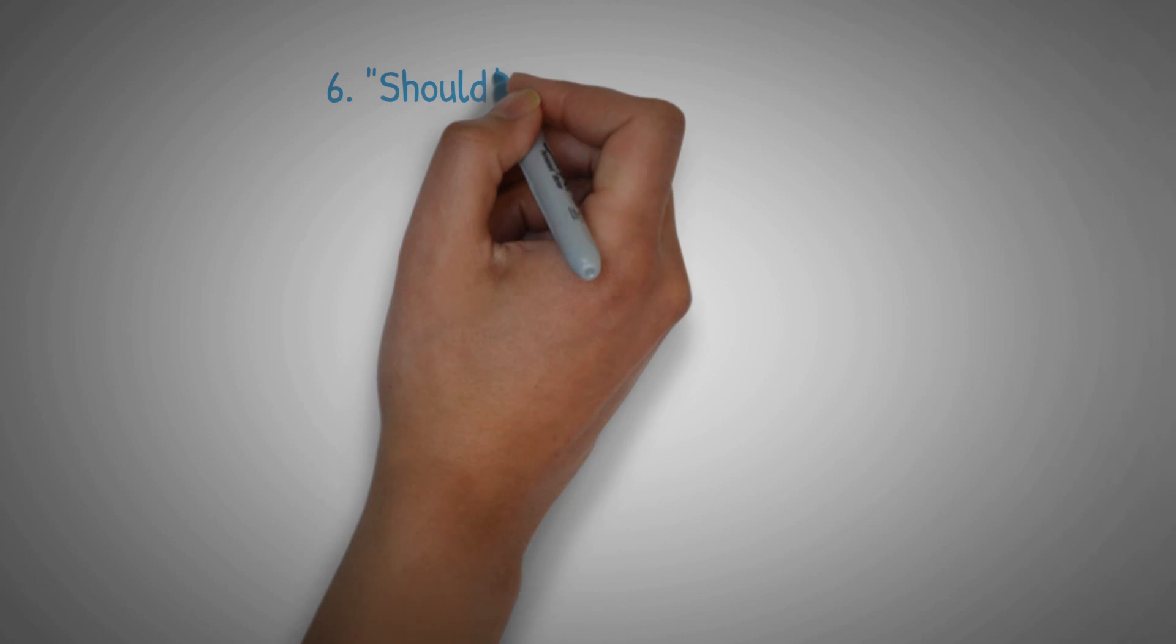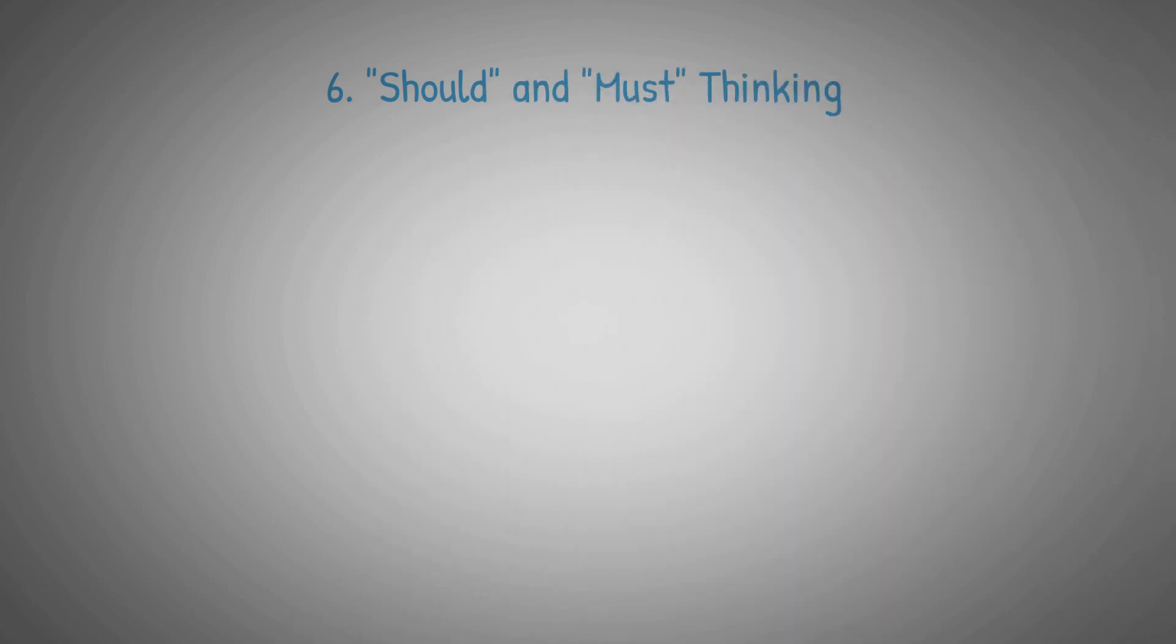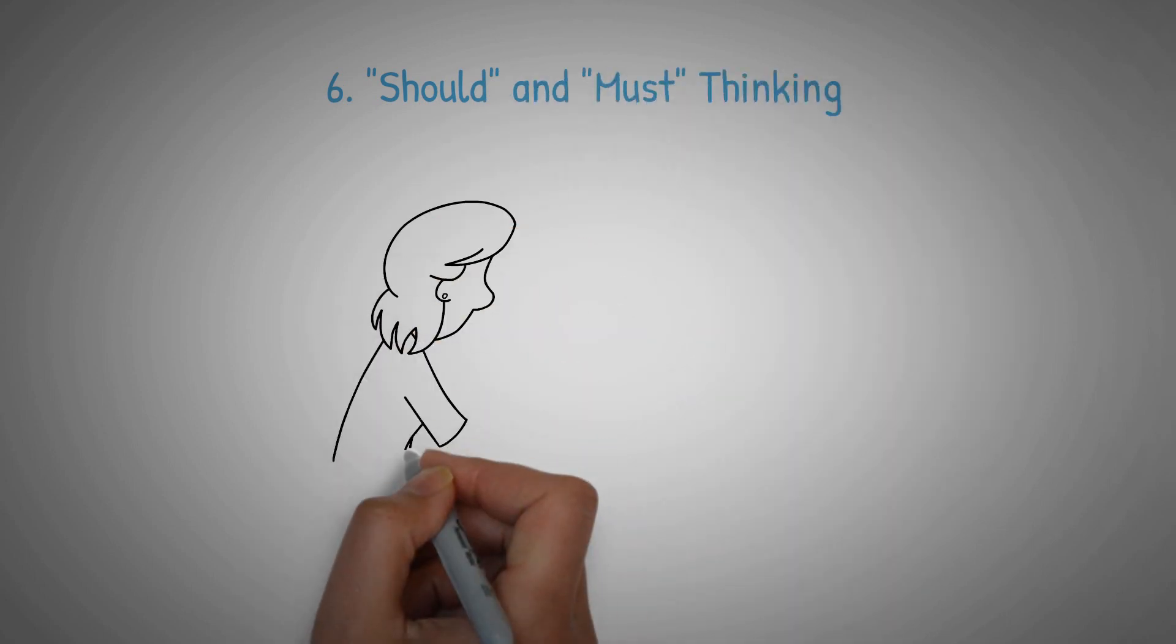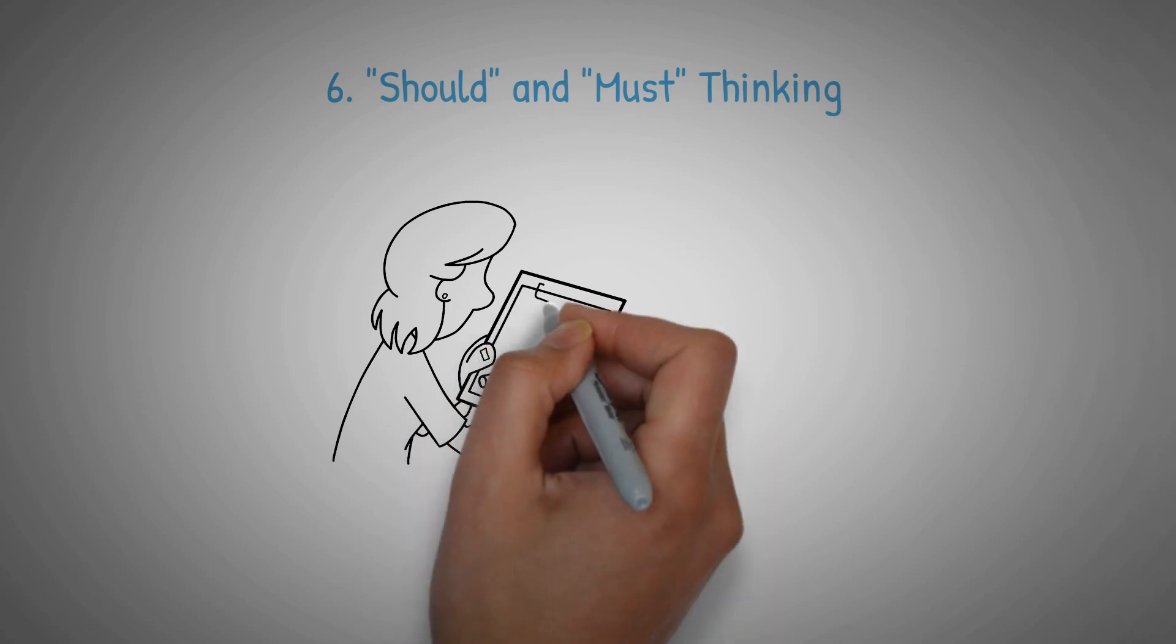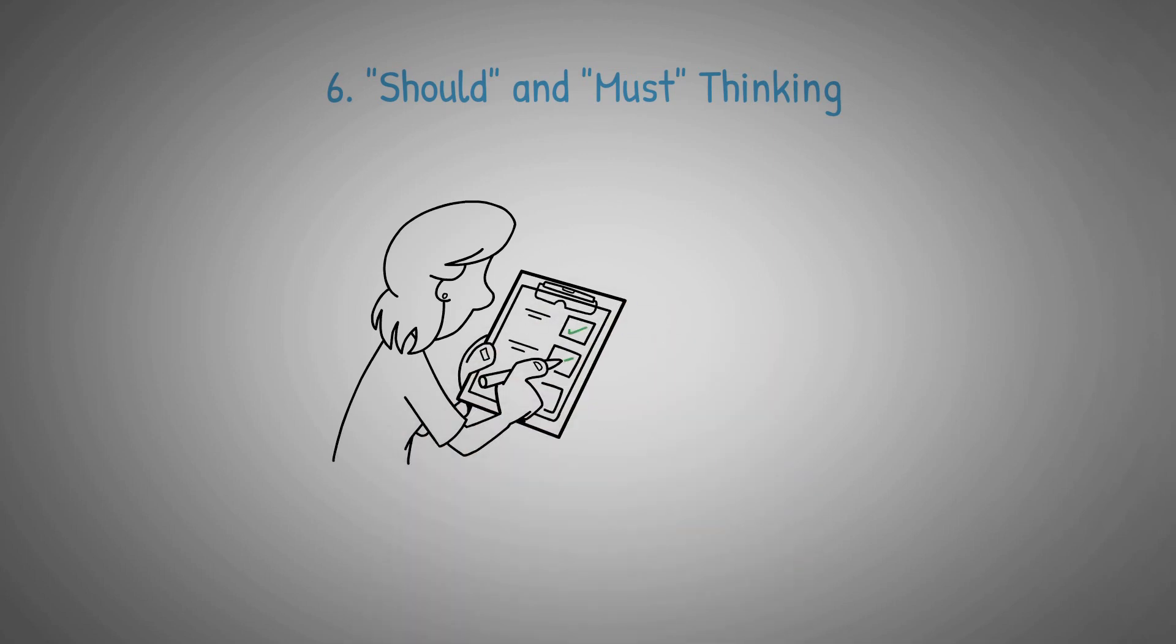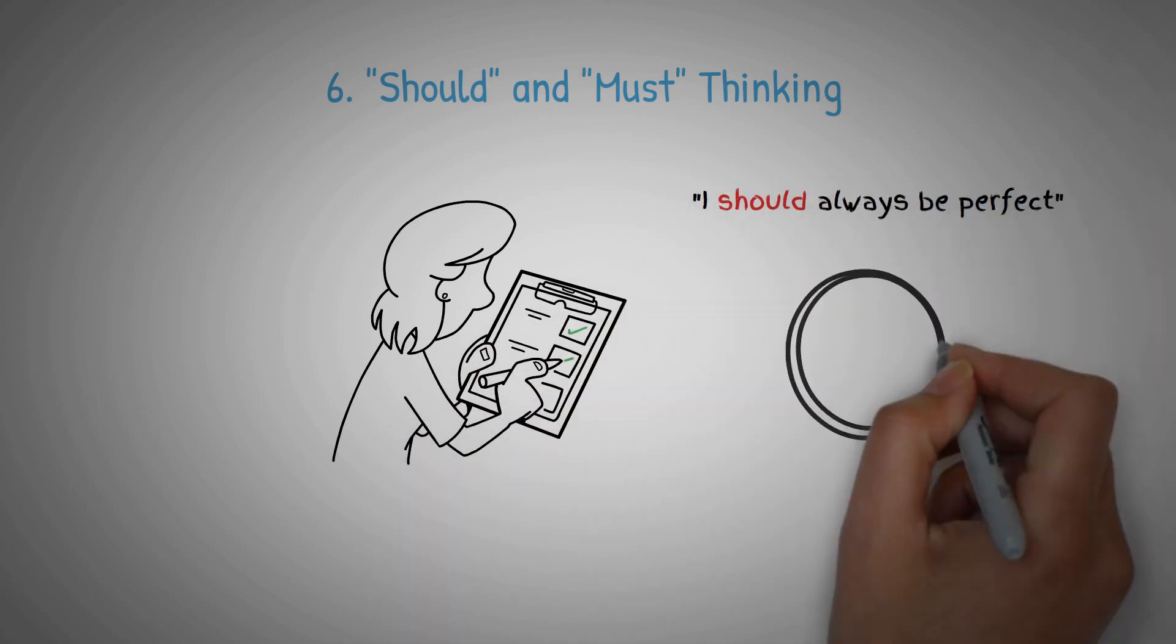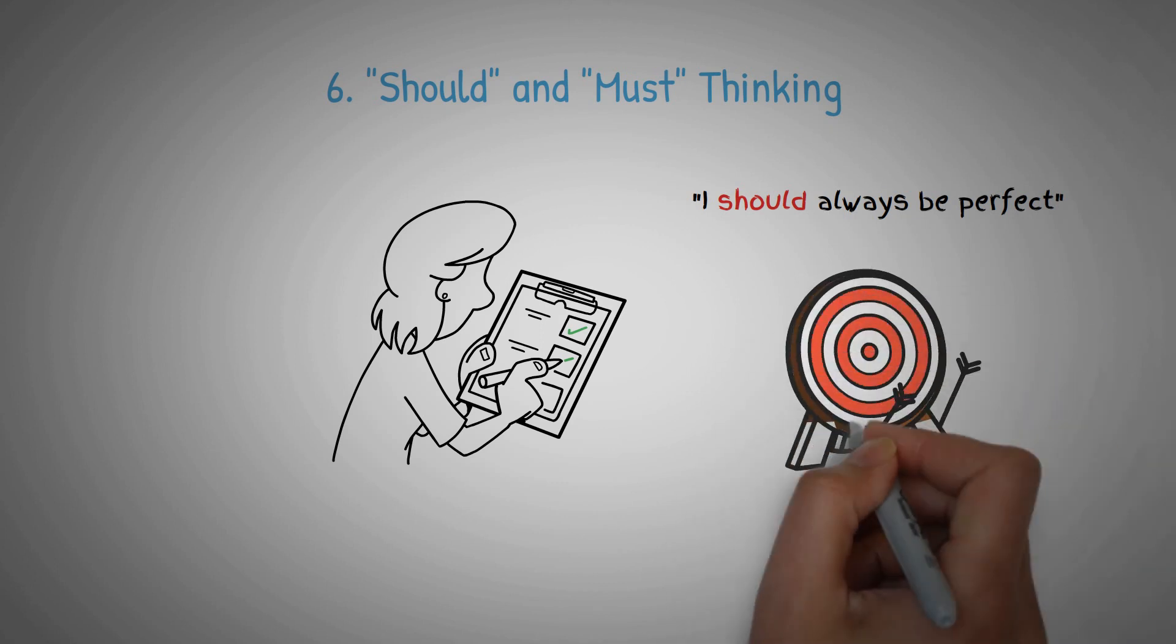There's also should and must thinking. This is when we have strict rules for ourselves or others and get upset when those rules aren't followed. For example, if you think, I should always be perfect, you're setting yourself up for failure and disappointment.